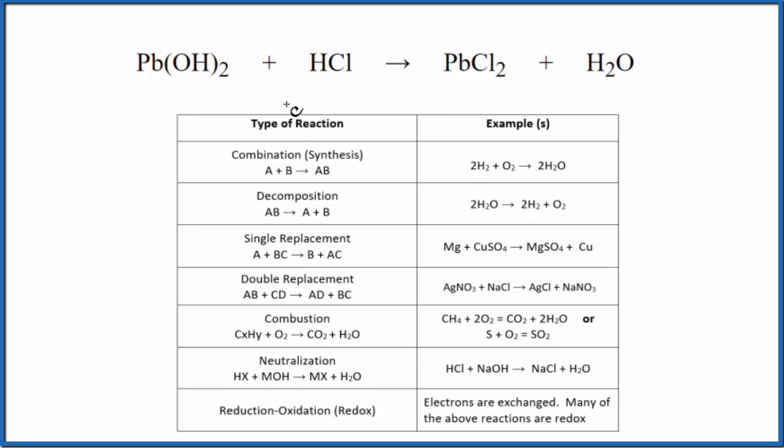So this is actually two types of reactions. First, we have a base. We can tell it's a base - we have a metal and a hydroxide group. So we have a base, and then that H in front of the chlorine, that HCl, that's an acid.